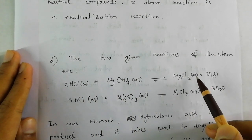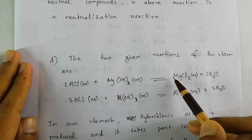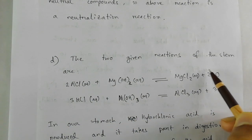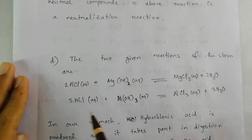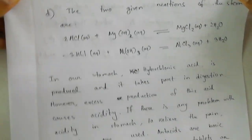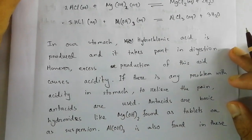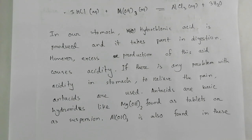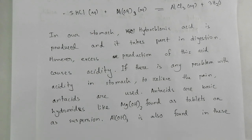We first complete the reactions: 3HCl + Al(OH)₃ → AlCl₃ + 3H₂O, balanced by the number of hydrogen atoms. In our stomach, hydrogen chloride is produced and takes part in digestion. If the production is in greater amount than required, it causes acidity because HCl is a very strong and corrosive acid, causing a lot of problems in the stomach.